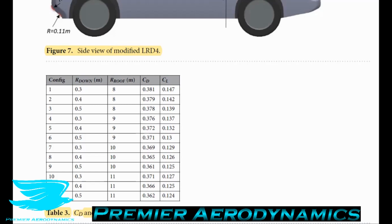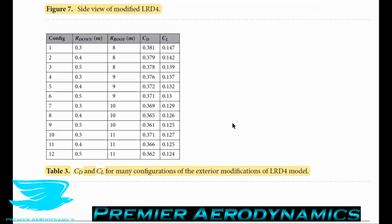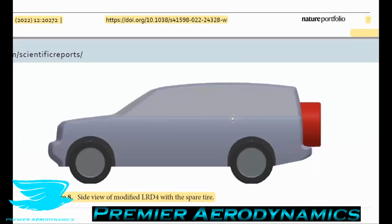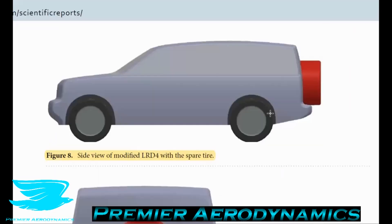Configuration 9 in Table 3 has the minimum drag coefficient of 0.361, which is much better than 0.4, and the most acceptable lift coefficient of 0.125. The optimal exterior design gives an improved drag coefficient of 9.75 percent compared to the benchmark. There was a configuration with a lower lift coefficient but higher drag, so the tradeoff really depends on how much drag reduction you want versus lift reduction — that's one of the difficulties when modifying a vehicle.